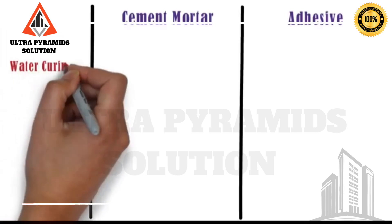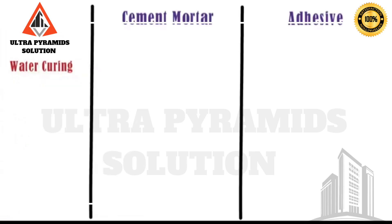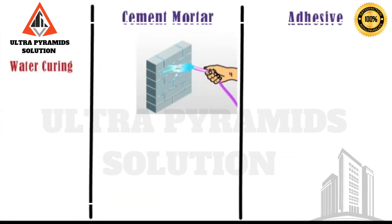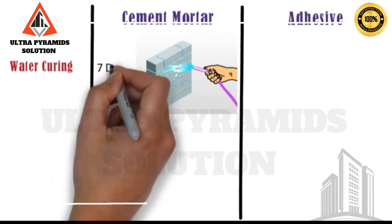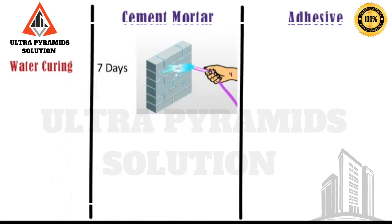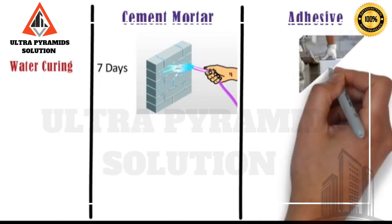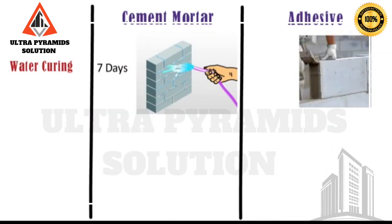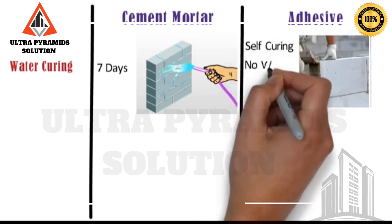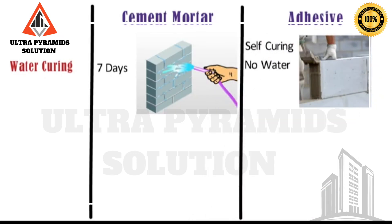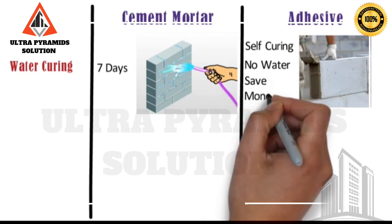Water curing: In case of cement sand mortar, water curing is required for a duration of 7 days. Whereas, adhesives are formulated such that they are self-curing — no water is needed for curing the adhesive. Hence, they help in saving water as well as money.